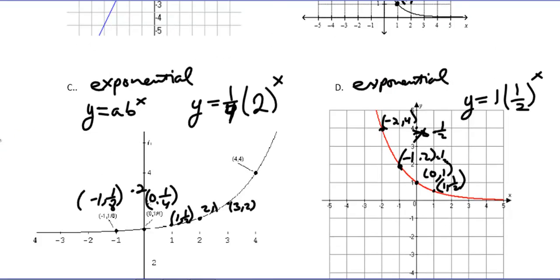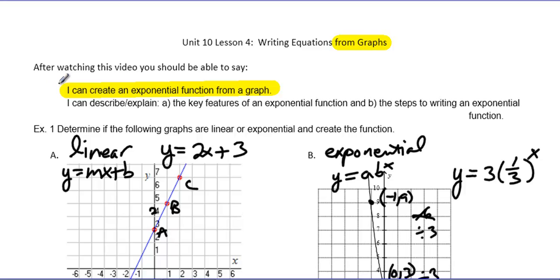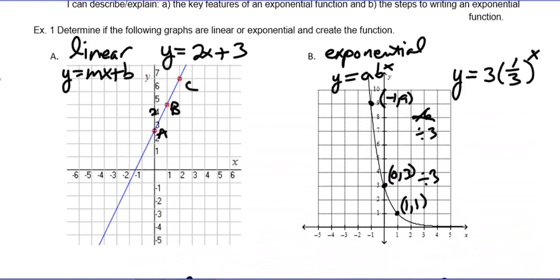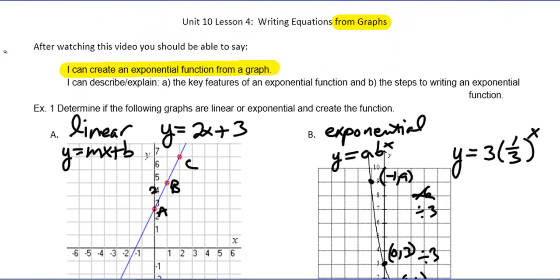In looking at what we did here, it's building off of what we learned yesterday. It's probably a little bit easier because we already know the beginning number, the a, the initial value. It's just identifying the points and creating it from there.